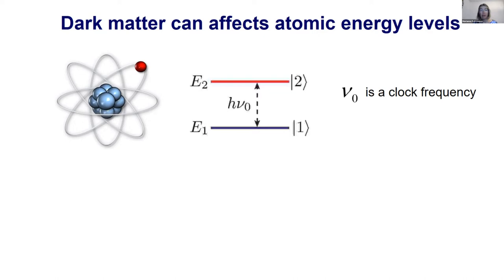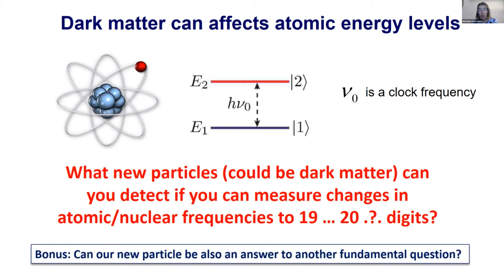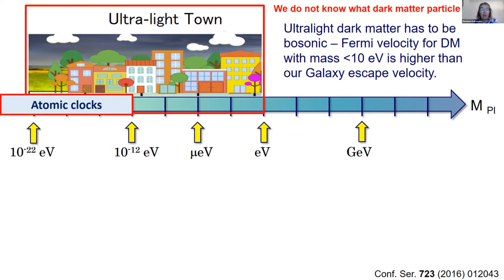The key question is what dark matter can affect atomic energy levels. Very heavy dark matter would not directly affect atomic energy levels. To directly affect atomic energy levels, one needs for example to change the fine structure constant, since all energy levels depend on alpha. If different clocks are affected differently, that effect can be detected. The question is: what new particles can be detected if you can measure changes in atomic or nuclear frequencies to 19 or 20 significant figures?